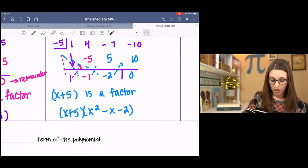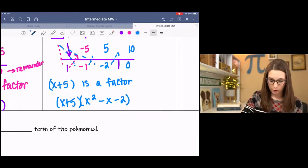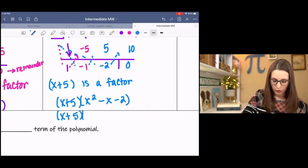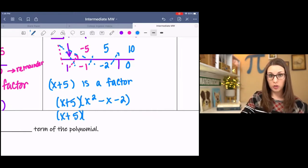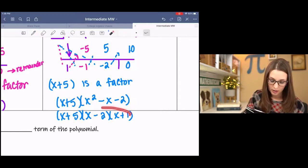But we can also just use our factoring skills or quadratic formula. And we're looking for factors of negative 2 to add to negative 1. And there you go.